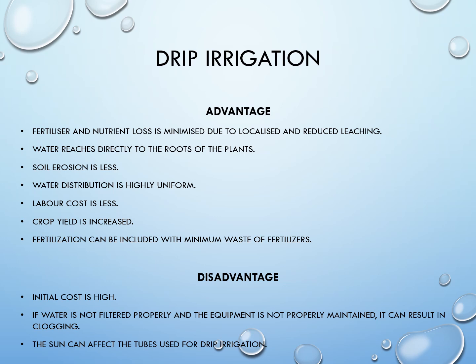Advantages of drip irrigation: fertilizer and nutrient loss is minimized due to localized and reduced leaching. Water reaches directly to the roots of the plants, soil erosion is less, water distribution is highly uniform, labor cost is less, crop yield is increased, and fertilization can be included with minimum waste of fertilizers.